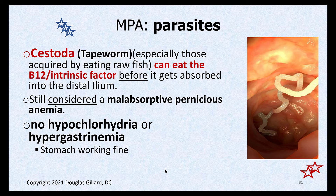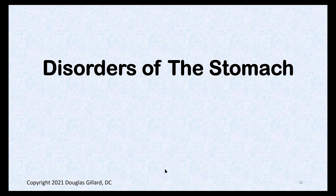Yet another MPA type, more common in equatorial regions: tapeworm — Diphyllobothrium latum (sestoda). This tapeworm consumes B12 and intrinsic factor voraciously, so nothing is wrong with any of your body's machinery — the tapeworm is simply consuming the B12–intrinsic factor complex before it can be absorbed. This leads to vitamin B12 deficiency and megaloblastic anemia. Once identified and the parasite is eliminated, the patient returns to normal.